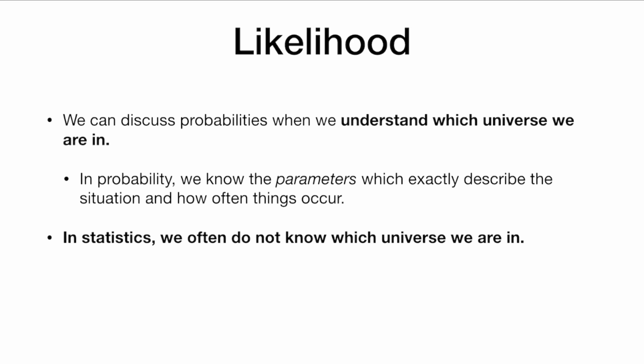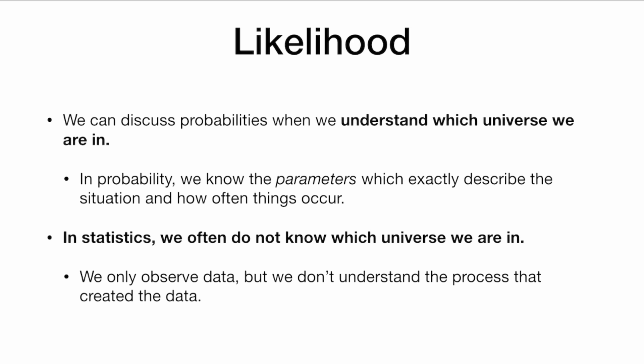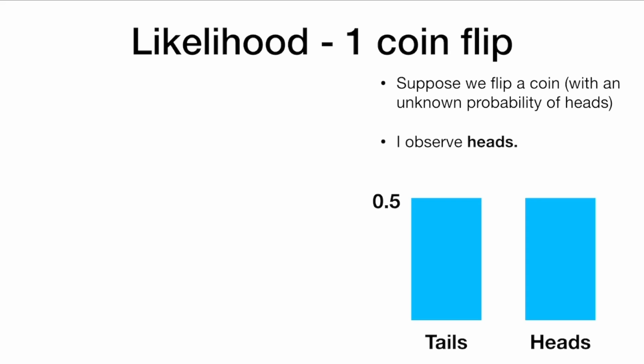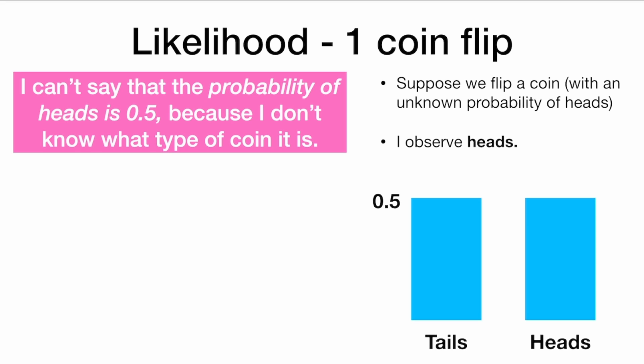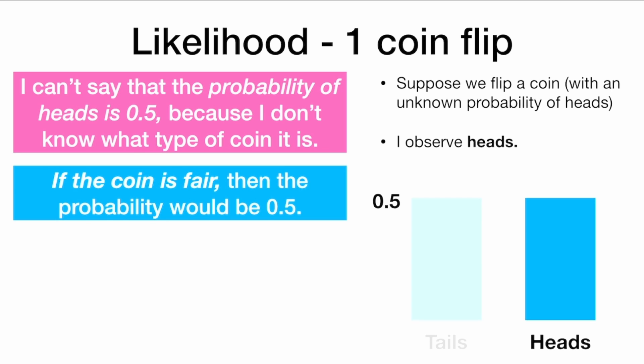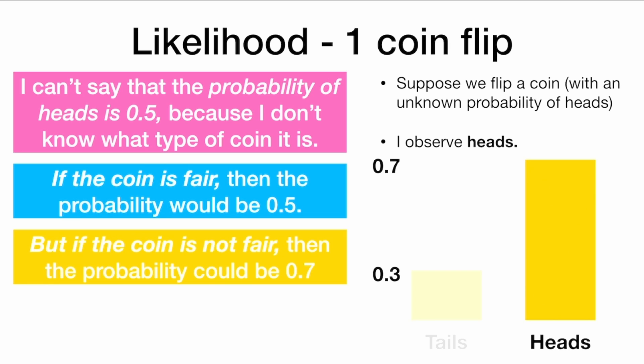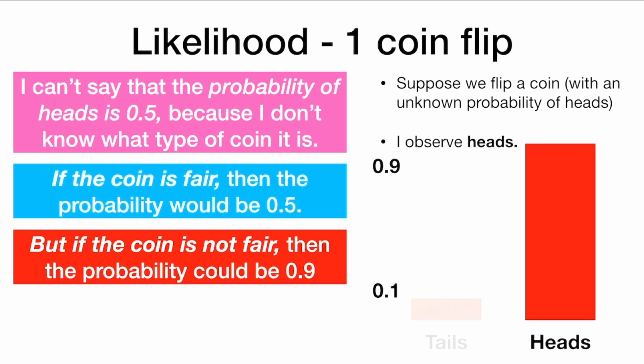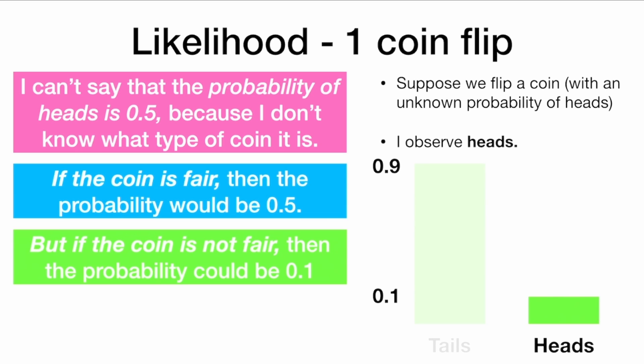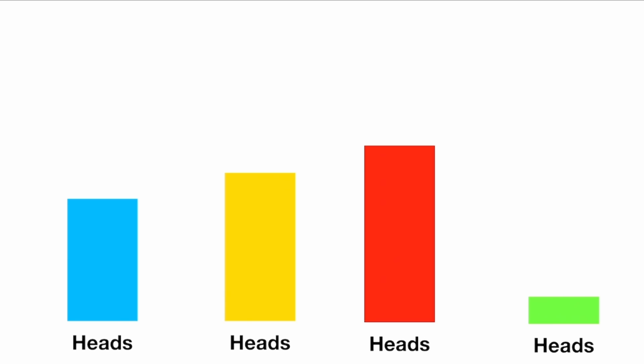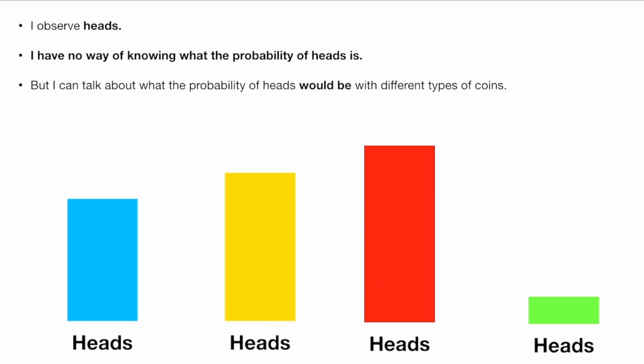But in statistics, we often do not know which universe we are in. We only observe data, but we don't understand the process that created the data. So when we talk about a coin flip, suppose we flip a coin with an unknown probability of heads and I observe heads. I can't say that the probability of heads is 0.5 because I don't know what type of coin this is. If the coin is fair, then the probability would be 0.5. But if the coin is not fair, then the probability could be 0.7 or 0.9 or any other number — it could be 0.1 probability of heads. I do not know which universe I'm in, so I do not know the probability of heads. I just know that I saw heads.